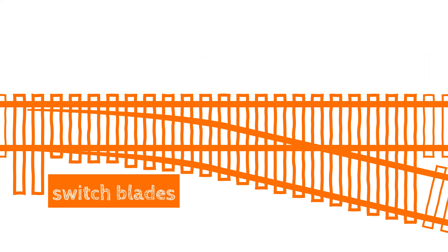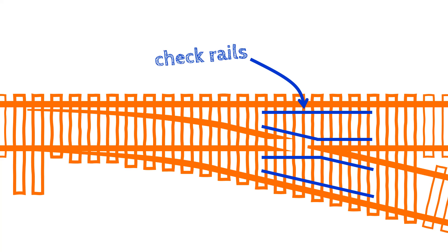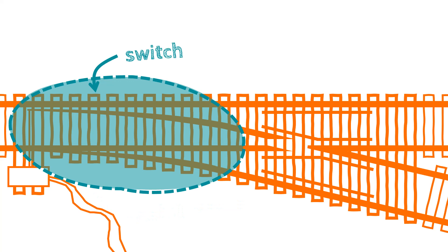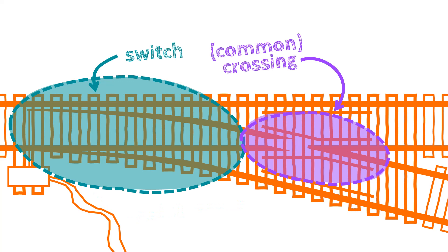Then we have the switch blades. These are machined down to as thin a point as possible, and that point is called the switch toe. Then we introduce gaps into the running edge to allow the wheel flanges to pass through, either going on the through route or the turnout route. Then we add check rails. Whilst in 99% of cases these will never be contacted by the wheel of a train passing through, they just allow that extra bit of security just in case a wheel set happens to be dynamically oscillating in slightly the wrong direction as the wheels pass through the gap in the crossing nose. We then need a points motor of some kind — that might be a lever but usually it's some sort of electromechanical device that actually operates and slides the switch blades from one position to the other. And that's where we get the name of a switch — it's a switch that allows trains to pass in either one direction or another.